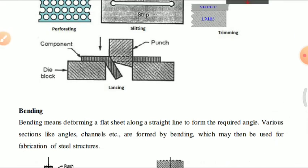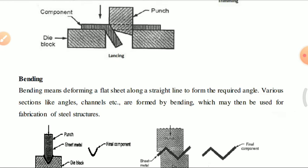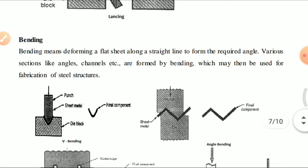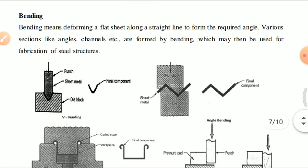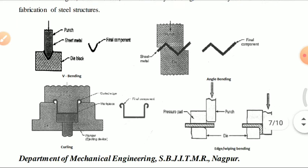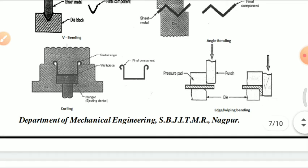Forming operations: bending means deforming a flat sheet along a straight line to form a required angle, generally used for fabrication of steel structures. Types of bending include angle bending, curling — which is used in large utensil handles — and edge bending, which is a simple 90-degree bend.